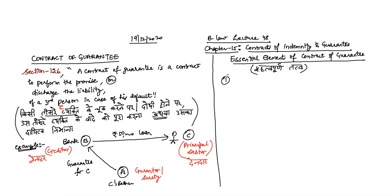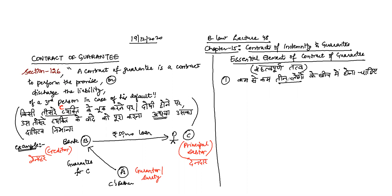First of all, in a contract of guarantee, at least three people should be there. Who are the three people? First, creditor. Second, principal debtor. And third, guarantor or surety. Three parties must be present.